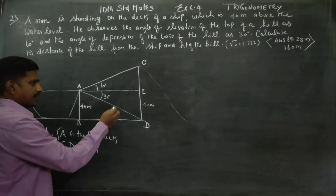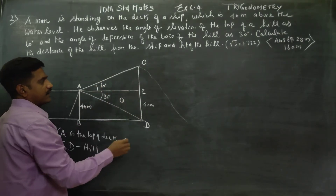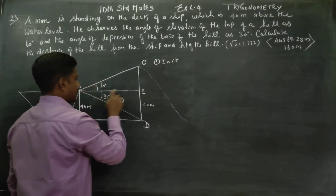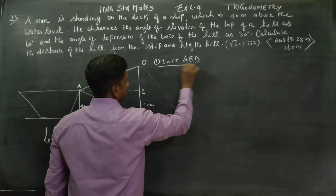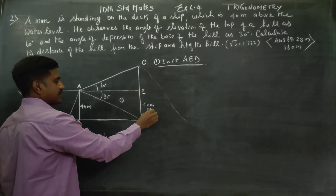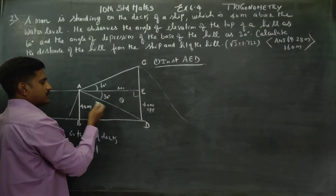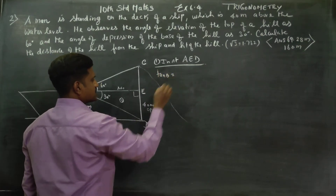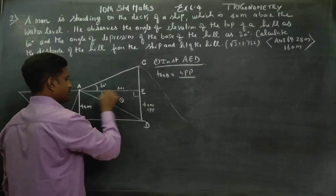First, we will start with triangle A, E, D. In the 30 degrees angle, it will be the opposite side, and this is the adjacent side, with 90 degrees. We will use opposite by adjacent — tan of theta.